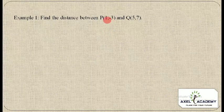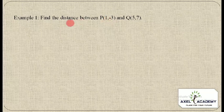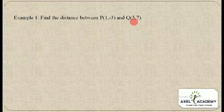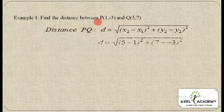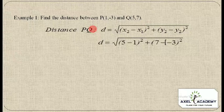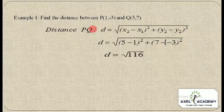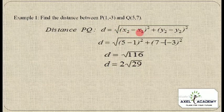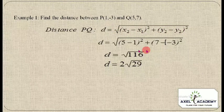Let's apply the distance formula with an example. Find the distance between P(1, −3) and Q(5, 7). Using the formula: PQ = √[(x₂ − x₁)² + (y₂ − y₁)²].